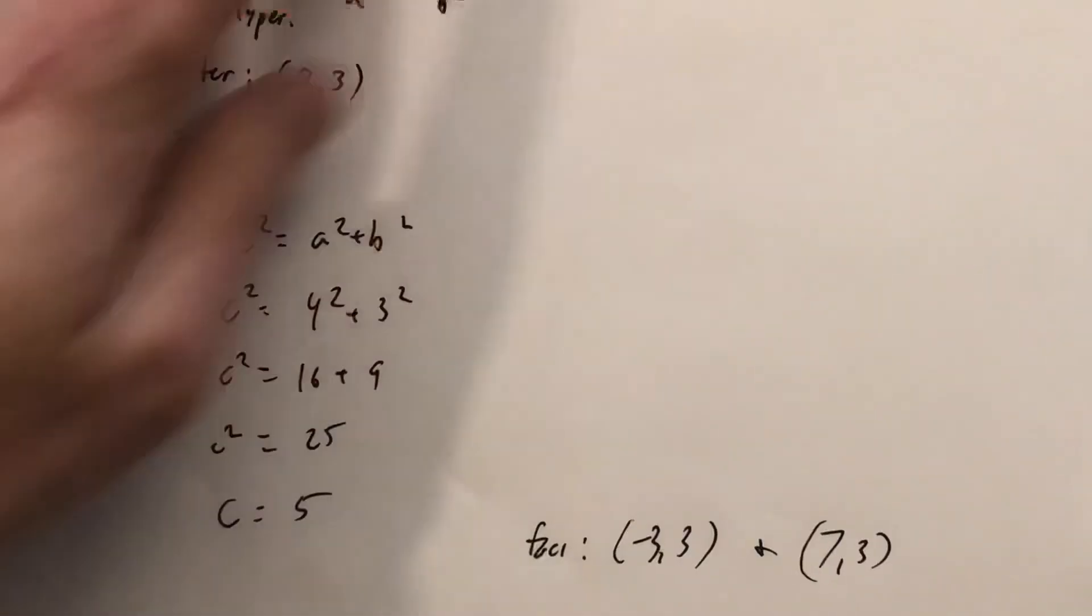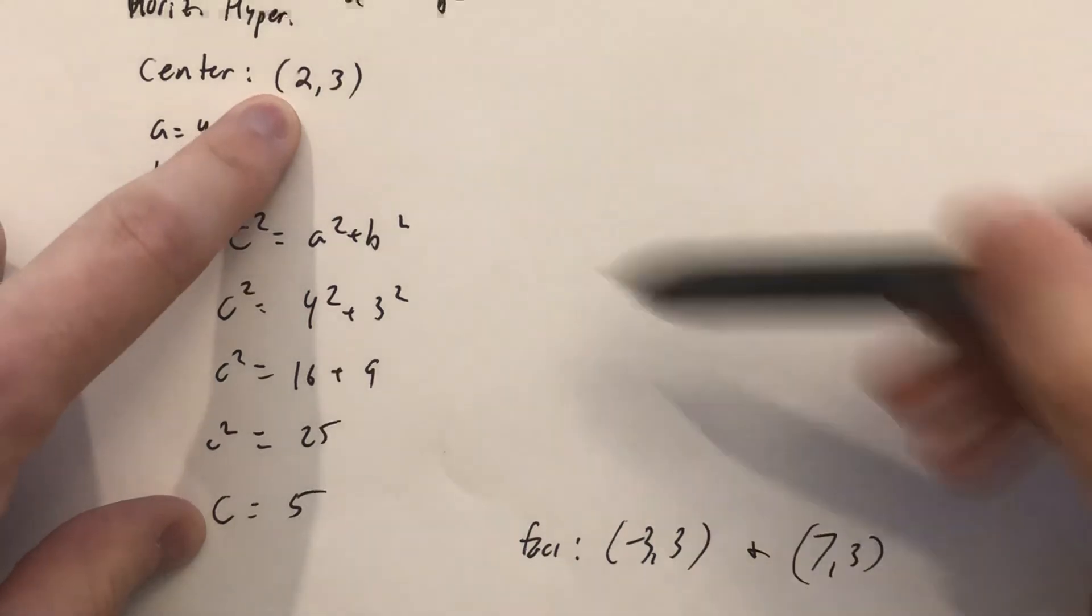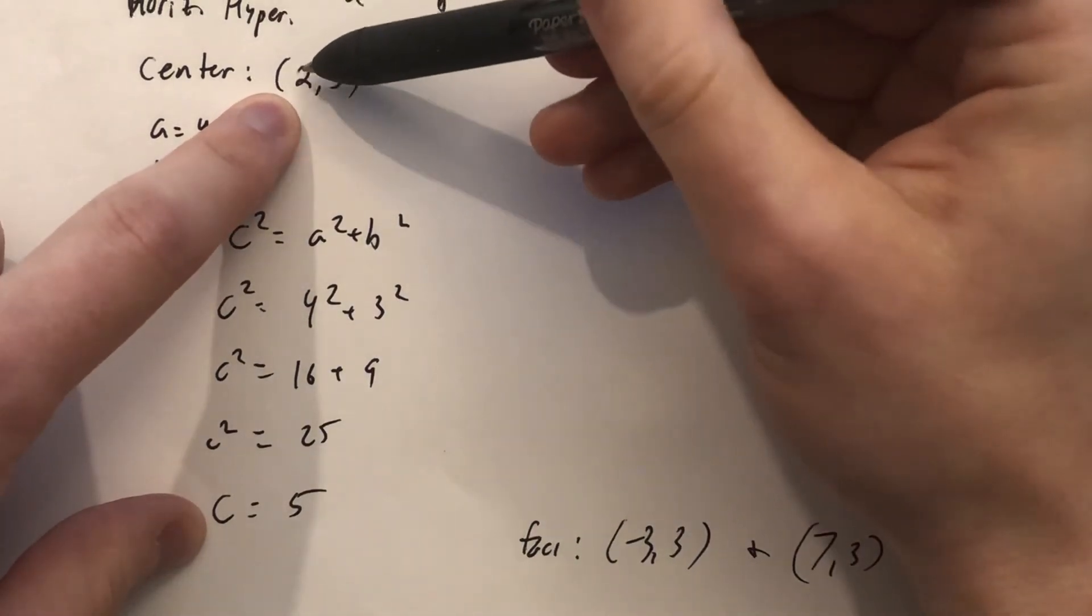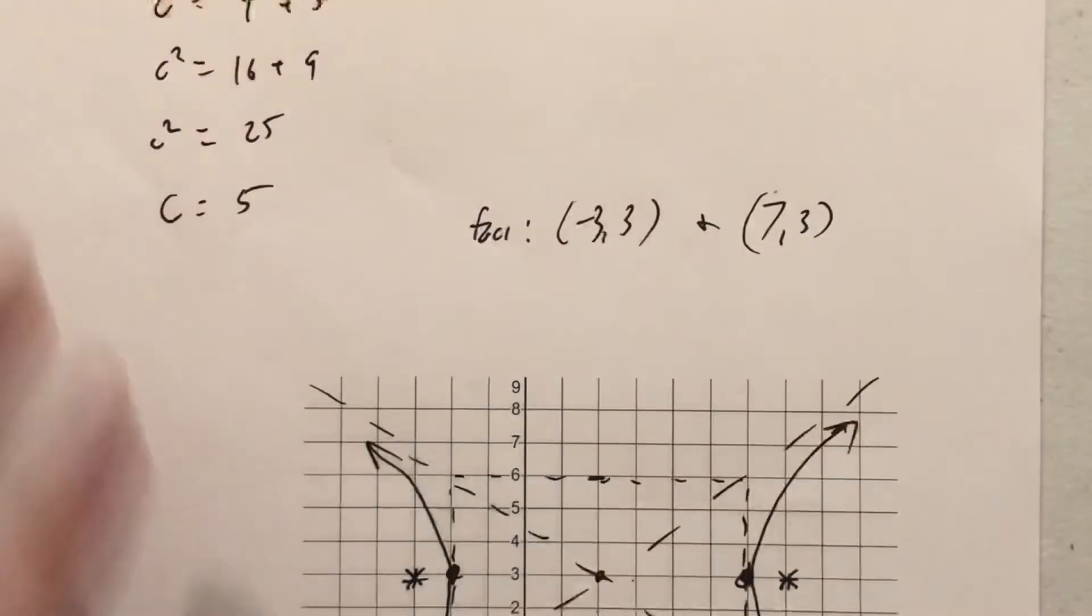And notice, even though it did turn out nicely, the idea was this was our center. So the y value didn't change, we just added and subtracted 5 from 2 and got the negative 3 and positive 7 for the location of those foci.